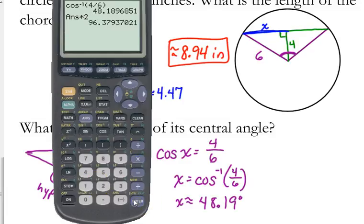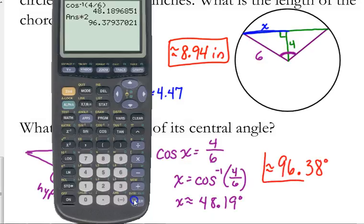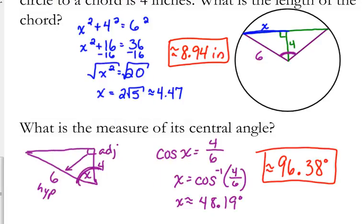So the actual central angle is 96.38 degrees. Okay, so on the worksheet that we were working on yesterday, you've got some problems that deal with bisecting these chords. Now let me point out...